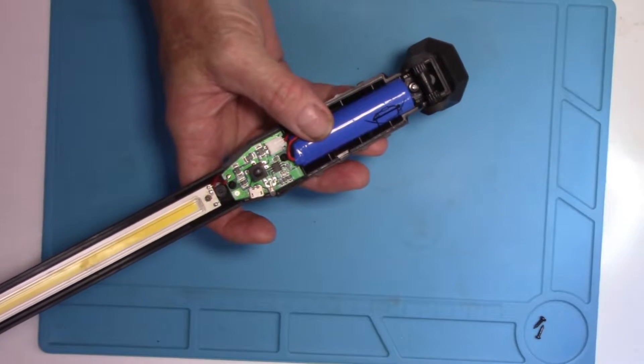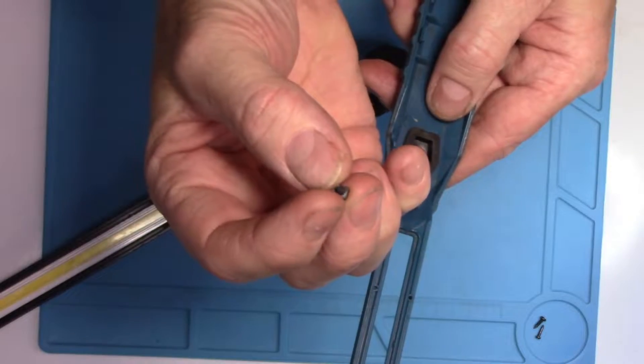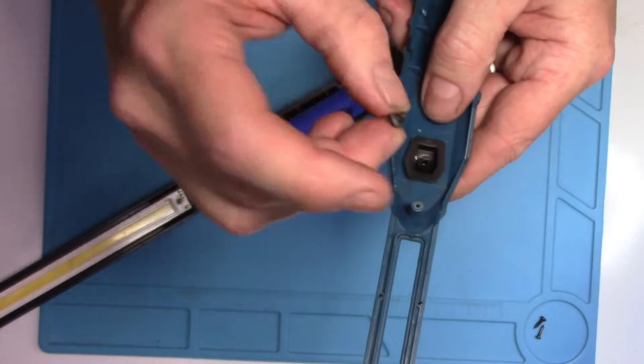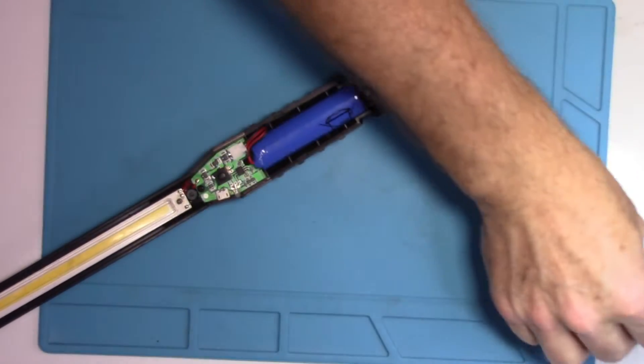One thing to be aware of is that this may fall out. That little bloke right there, as you can see, there's a bit of a knobby bit, and that fits into that hole, and then that sits on top of the switch.